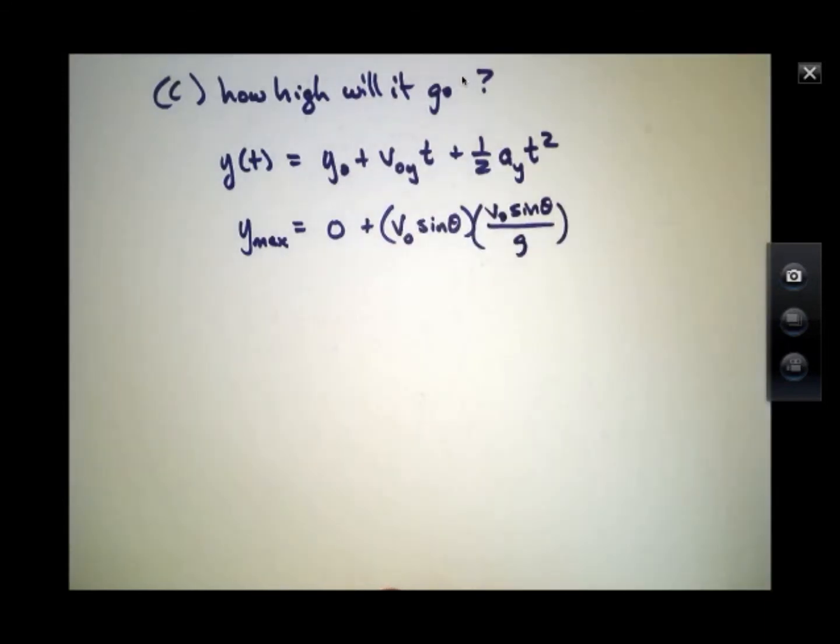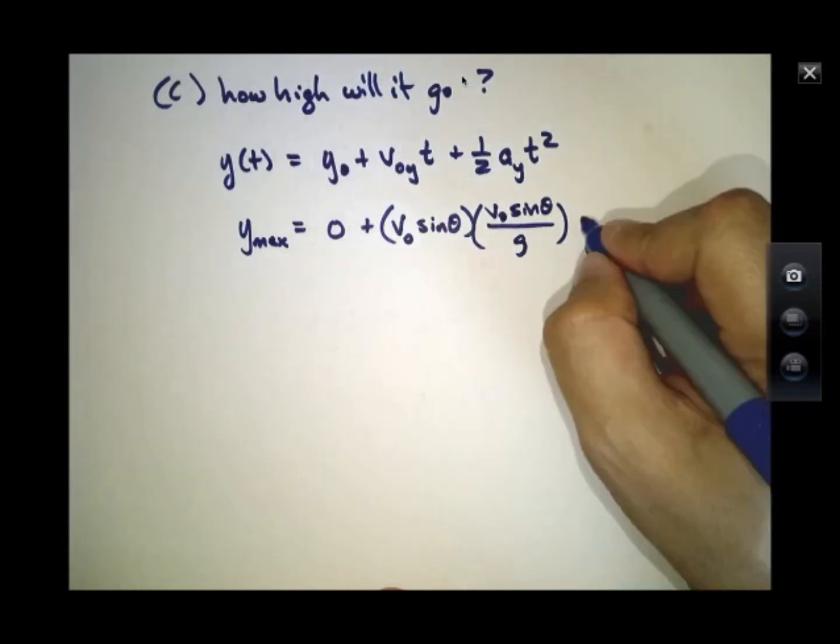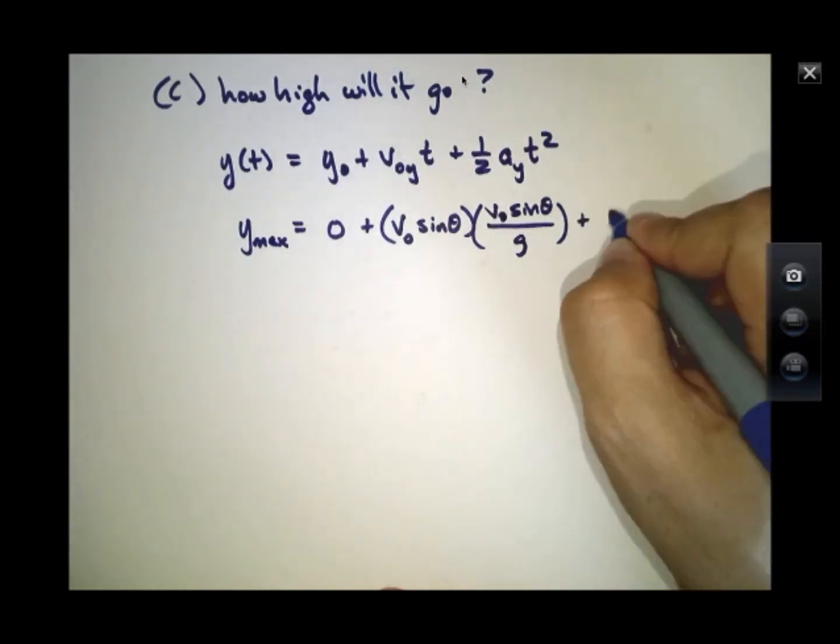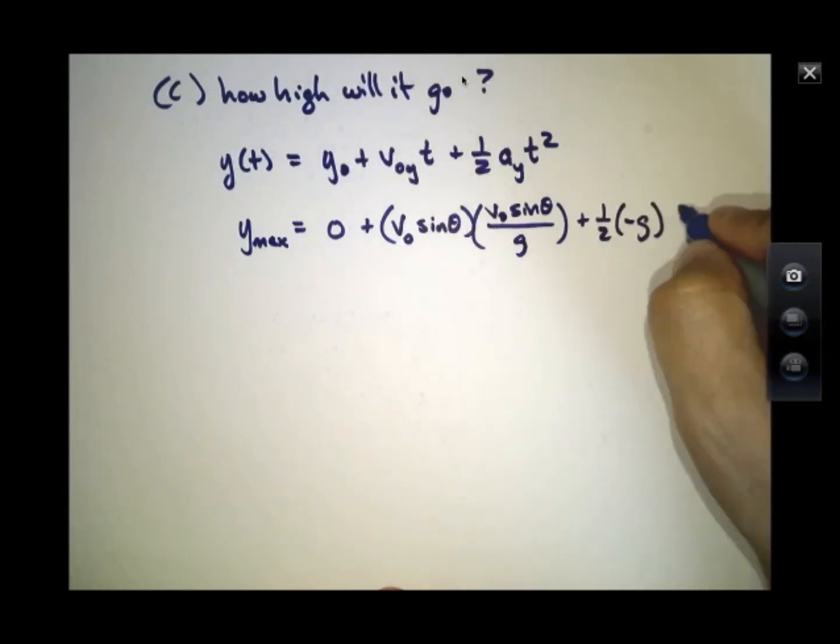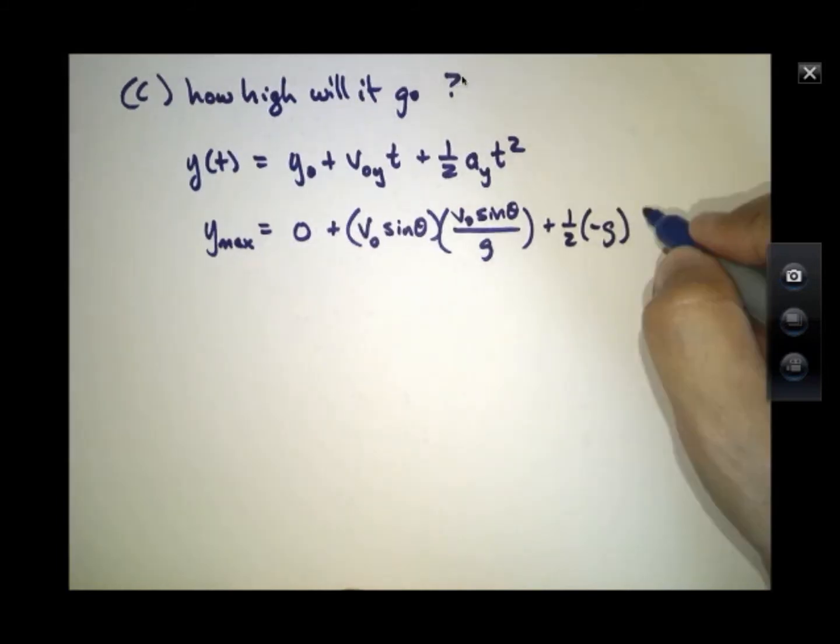Notice there's no factor of two now. And then we're going to have this last term in this expression plus one-half minus g. We're going to put that same time in, v₀ sin θ over g, but now we'll square it.